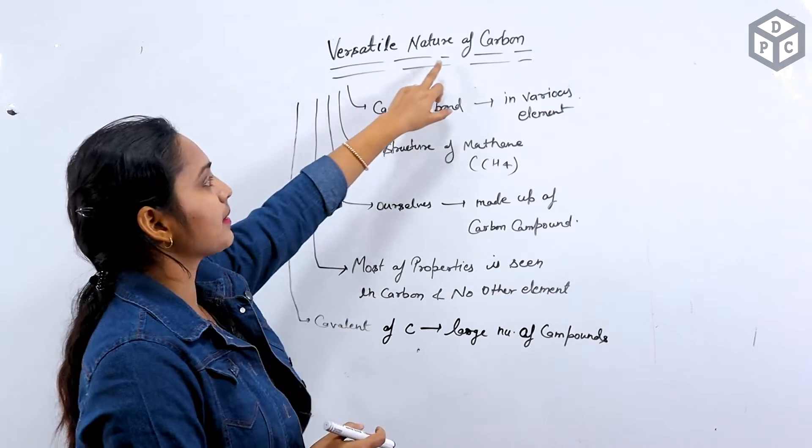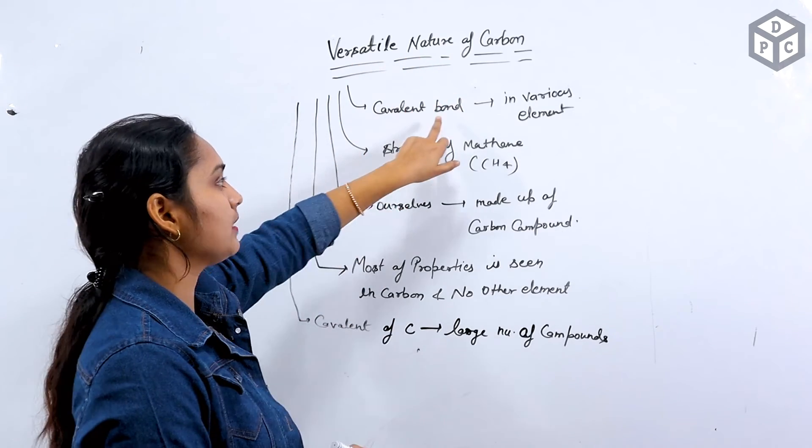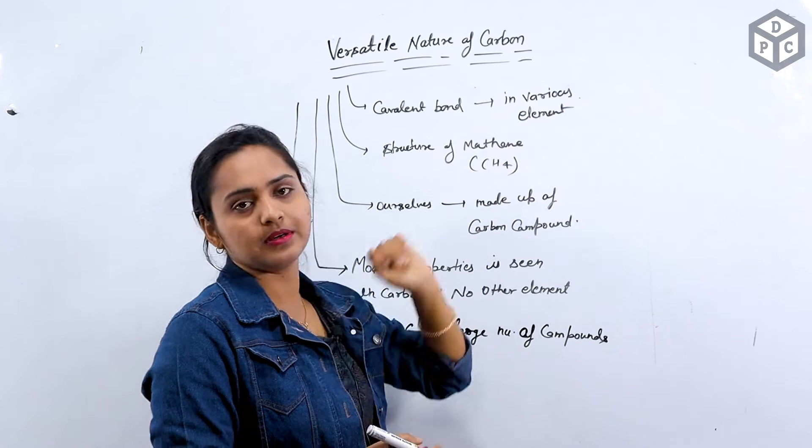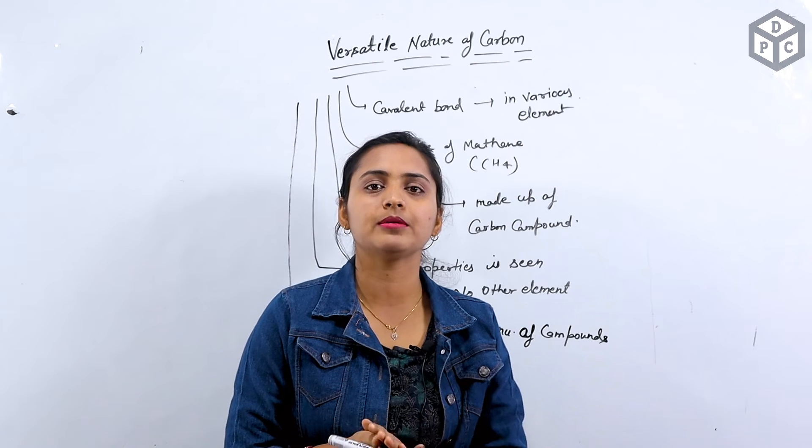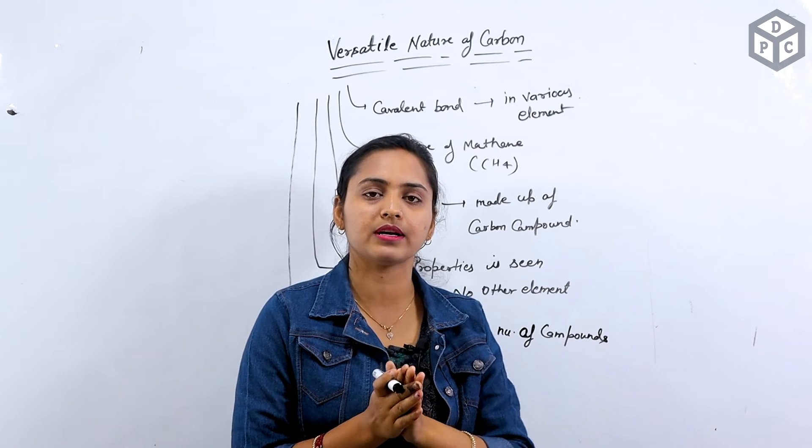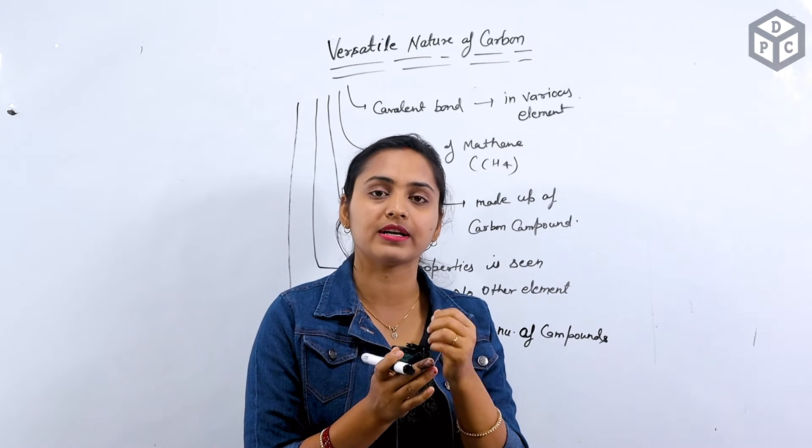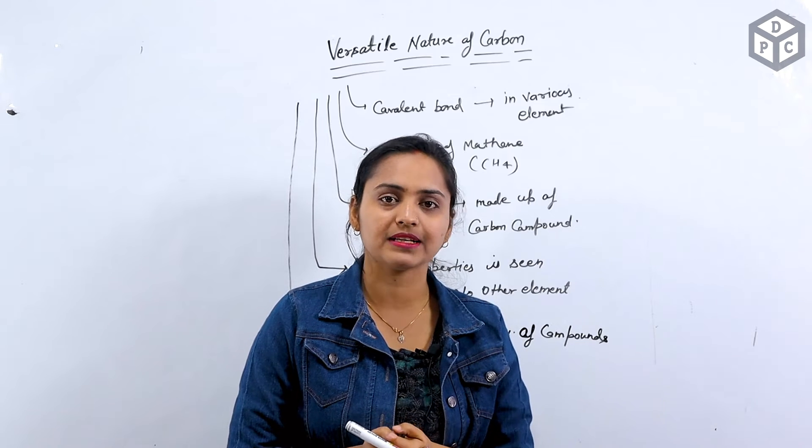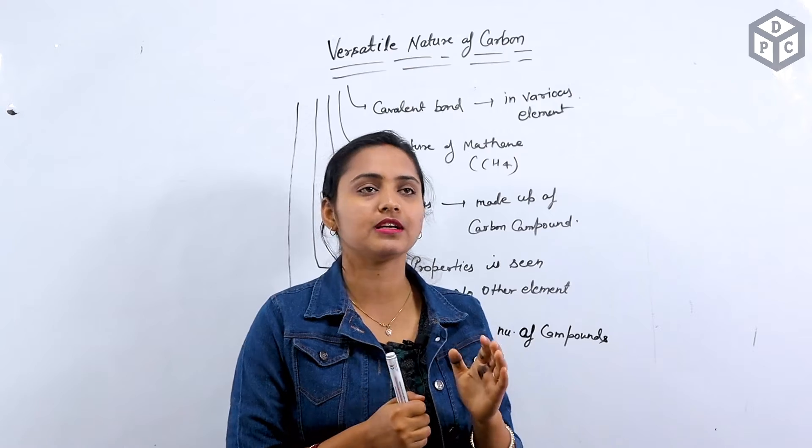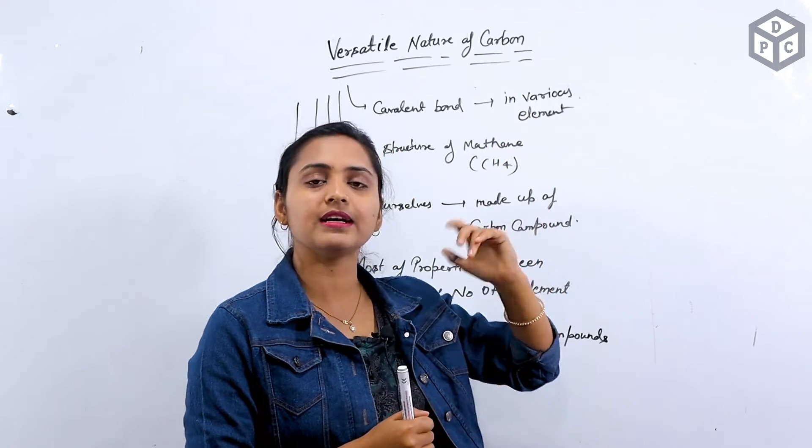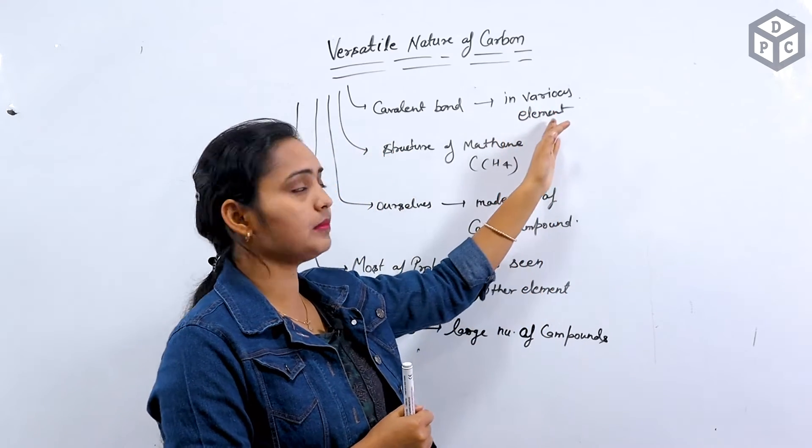The most important thing is covalent bond with various elements. After carbon, there is silicon and germanium. In these elements, there is also a balance of 4 electrons. But they don't have such properties and capacity that they can create covalent bond with other elements like carbon does.